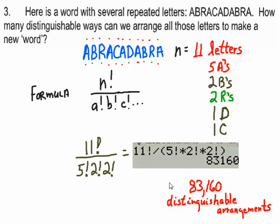You've got to be able to know how to count in order to do probability. Counting is kind of important — you've got to be able to count what you want, and count all the possibilities too.